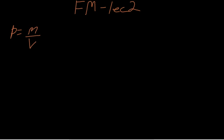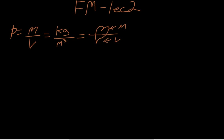The SI unit for mass is kg, and the SI unit for volume is meters cubed. Another way to remember that density is equal to mass over volume is to make a shape that looks like M on top and V on the bottom. So density is equal to mass over volume, and the SI unit is kg per meter cubed.